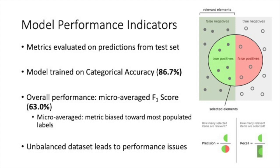My main model performance indicator was the micro-average F1 score, which measures both precision and recall simultaneously. I micro-averaged it to bias the metric toward the most populated labels due to the asymmetric label distribution. This was needed over accuracy because 90% of the data is not labeled as any form of toxic comment. The model's categorical accuracy on the test set was 86.7%, which isn't as high as I hoped — I was aiming for 90%. The unbalanced dataset tends to lead to performance issues in machine learning models.